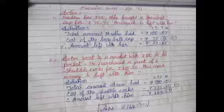Next is: Sonu went to a market with 500 rupees in his pocket. He purchased a pack of 6 shuttlecocks for rupees 335.50. How much money is left with him? Again we have subtraction. Total amount Sonu had equals 500. Cost of the shuttlecock equals 335.50. Amount left with him equals rupees 164.50.